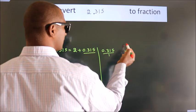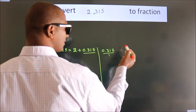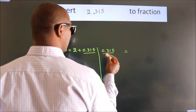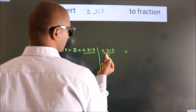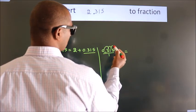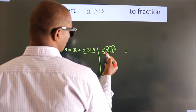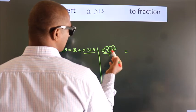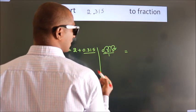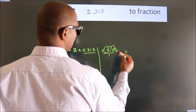To convert this to fraction, for that we have to move this decimal after 1, 2, 3 numbers. To move this decimal after 3 numbers, for that we have to multiply it with 1000.